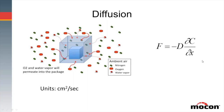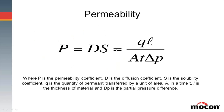One thing to note about diffusion is that it ties very closely with temperature — higher temperature means more energy and faster-moving molecules, so diffusion increases with temperature. Permeability is the product of the two: diffusion times solubility. Understanding these two properties really tells us about overall permeation.